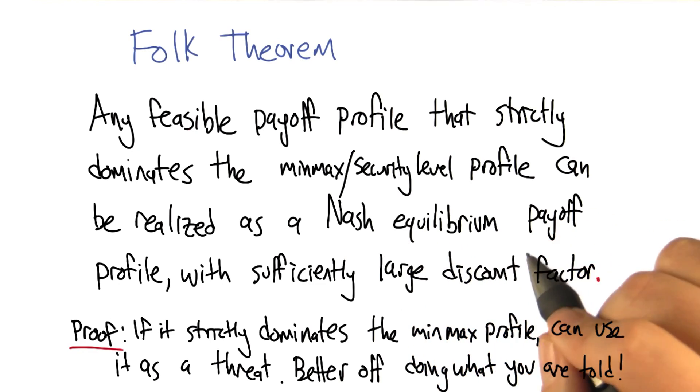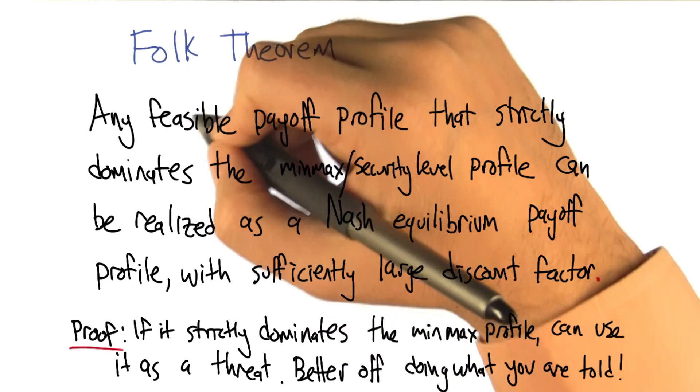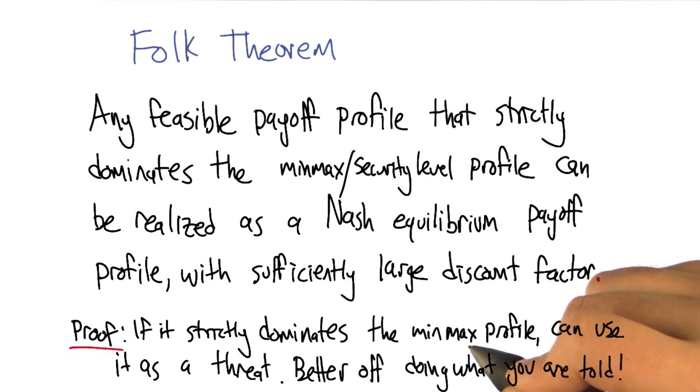The only way that that's going to be stable though is if the thing that you're asked to do, the feasible payoff, is better than the minmax, right? Because that has to be a threat.